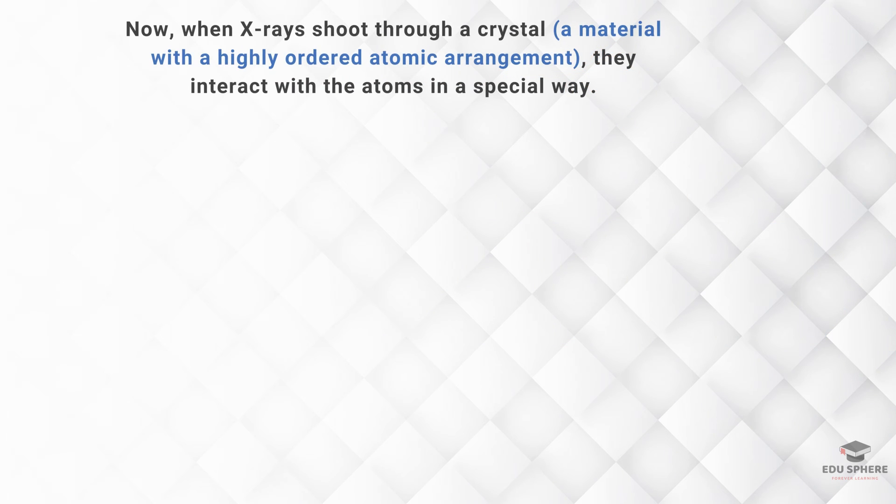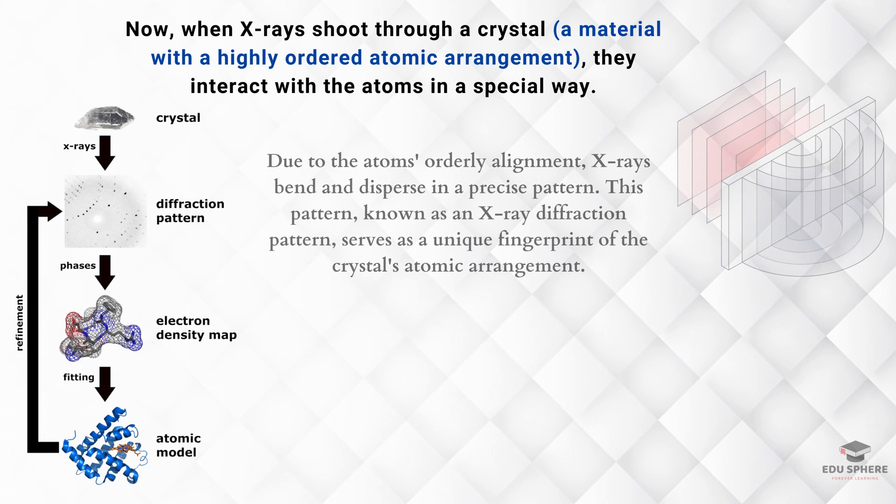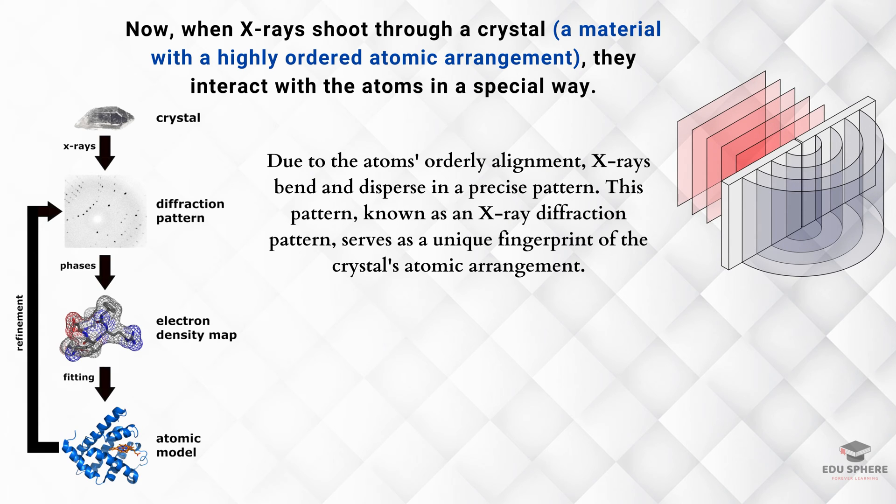Now, when X-rays shoot through a crystal, they interact with the atoms in a special way. Because the atoms are lined up in neat rows, the X-rays bend and spread out in a specific pattern. This pattern, called an X-ray diffraction pattern, is like a fingerprint of the crystal's atomic structure.